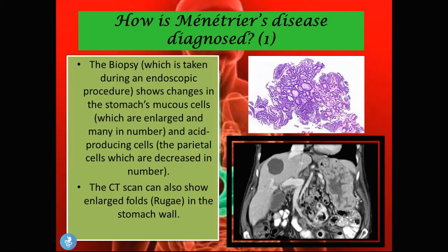The CT scan can also show us enlarged folds or rugae in the stomach wall. On the picture on the right you can see the CT of the stomach. Normally the stomach doesn't have all these folds or multiple wormy structures. But because patients with Ménétrier's disease have these enlarged gastric folds or rugae, this is what the abdominal CT shows their stomach to look like.